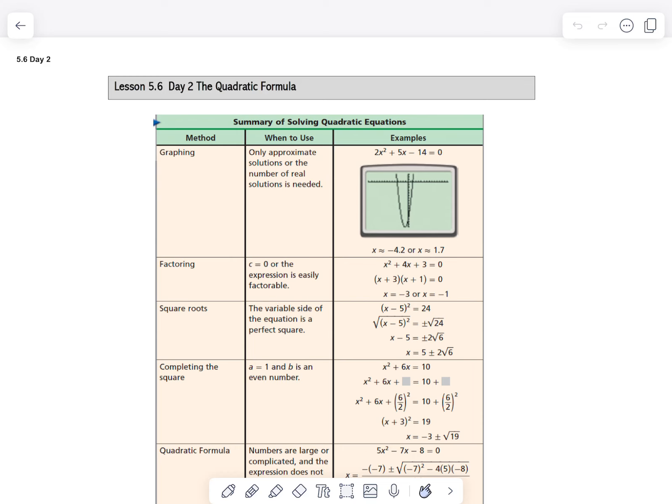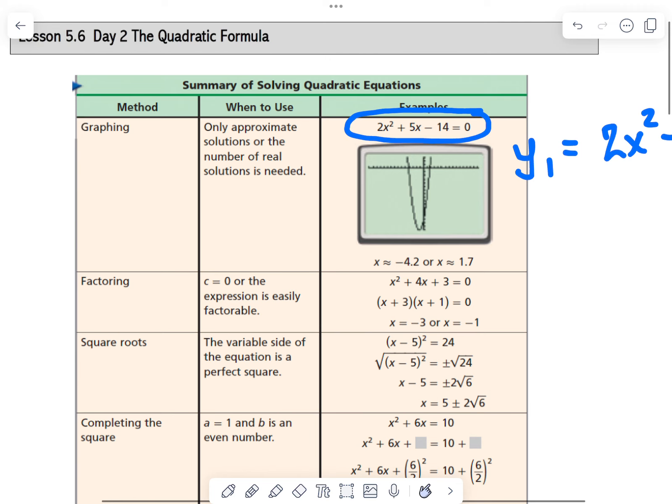So the first method to solving a quadratic equation is being able to graph it. So here is our quadratic equation and we can use a graphing calculator. We could type it in like this and we find the x-intercepts. So here is an x-intercept, an x-intercept, and we get approximate values.